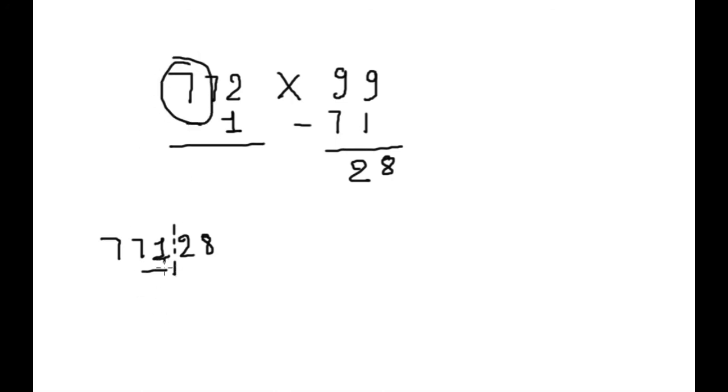772 into 99. Step 1. Minus 1. 771. Step 2. Minus this 71. From here 82. We will write 28 here. This 7, we will subtract from this 1. So 82467. This is our answer. Next example.